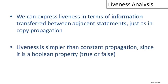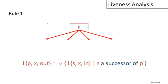So once again, what we want to do is to have global information about the control flow graph. In this case, the property is whether X will be used in the future. We want to make that information local to a specific point in the program so we can make a local optimization decision. Just like for constant propagation, we're going to define an algorithm for performing liveness analysis following the same framework. We'll express liveness in terms of information transferred between adjacent statements, and liveness turns out to be simpler than constant propagation since it's just a Boolean property — either true or false.